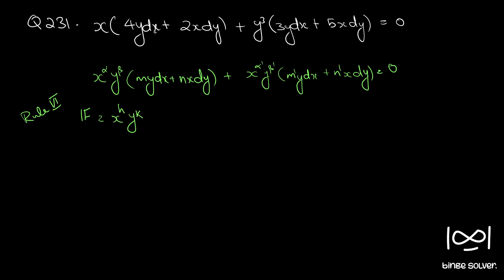Before applying Rule 6, we should check whether the differential equation is exact or not. I will assume it is not exact and find the integrating factor. In an exam, you should first check. If x^h · y^k is the integrating factor and we multiply it throughout, we get an exact equation satisfying ∂M/∂y = ∂N/∂x. We will use this property to find h and k.